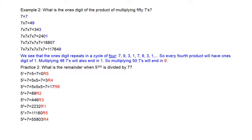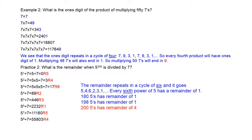The remainders are 5, 4, 6, 2, 3, 1 — and then it starts repeating. So the remainder repeats in a cycle of six: five, four, six, two, three, one. For every sixth power of 5, there is a remainder of 1 when divided by 7.